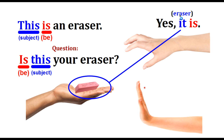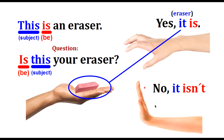The answer is: Yes, it is — we use 'it' because it's one thing. Or the negative: No, it isn't. Remember, 'isn't' is the negative form of 'is.' Very good.